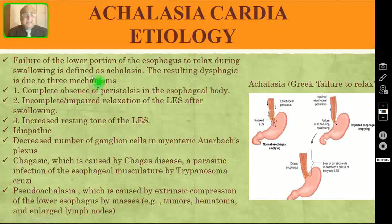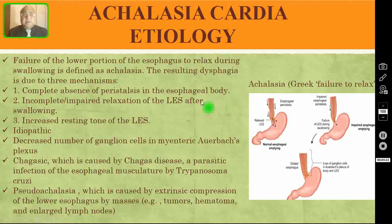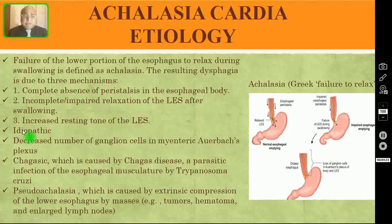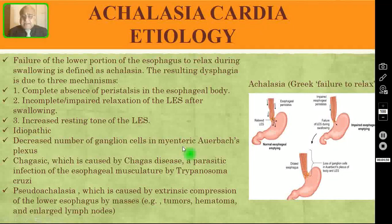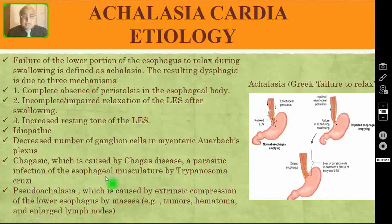The resulting dysphagia is due to three mechanisms: number one, complete absence of peristalsis in the esophageal body, or aperistalsis; number two, incomplete or impaired relaxation of the lower esophageal sphincter after swallowing; number three, increased resting tone of the lower esophageal sphincter. Mainly it is idiopathic. In many cases there is a decreased number of ganglion cells in the myenteric Auerbach's plexus. Chagas disease, caused by Trypanosoma cruzi, also causes an achalasia-like problem because of damage to these ganglion cells.